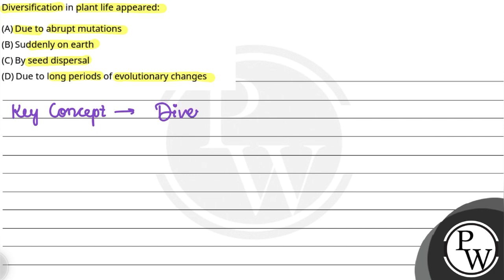Diversification का meaning है कि यह एक process है जिसमें plant species evolve होती हैं और earth के across spread हो जाती हैं — इस process को diversification कहते हैं। अब एक-एक option की बात करते हैं।